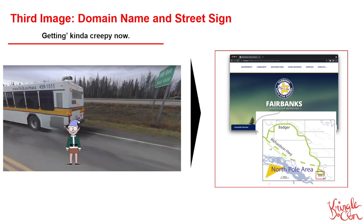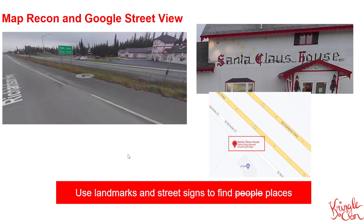Spending some time looking at the map and doing Google Street View, we can see that on the Richardson Highway there is that street sign we just saw — Fifth Avenue, next right. This is where our elf is standing, looking over at this building. When we pan over in Google Street View, we see that this is the Santa Claus House — a Santa Claus themed house and gift shop. This definitely makes sense as a place that Let It Snow would want to perform. We're able to use landmarks and street signs to find places. We're not stalking people — we're stalking elves.